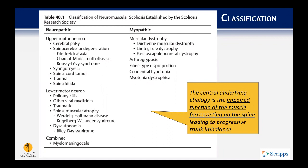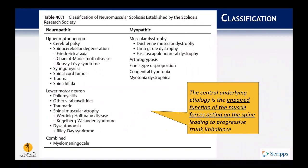Upper motor neuron includes the most common type — cerebral palsy — which we'll spend a fair amount of time discussing. Other upper motor neuron pathologies include spinal cord tumor, trauma, and spina bifida. Lower motor neuron issues include spinal muscular atrophy and poliomyelitis. The combined neuropathic pathway would be myelomeningocele. In the myopathic category, the most common conditions are muscular dystrophy and arthrogryposis.